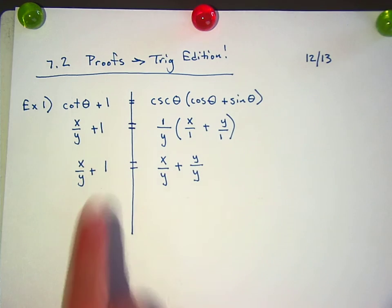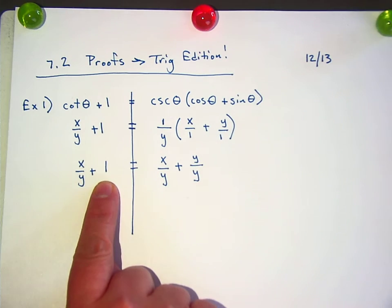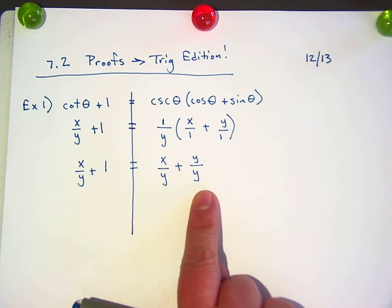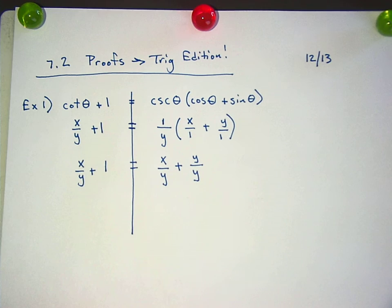Now, you can either change this one into y over y, because that's the same thing as 1, or you could change the y over y into 1, and then say that they're the same. Do you see what I mean? You cannot go right up to the finish line and then go, well, you get it now. Like, no, finish it.